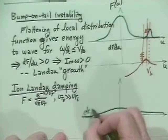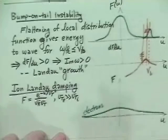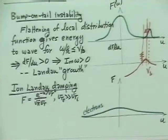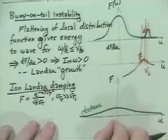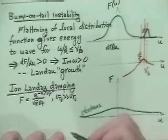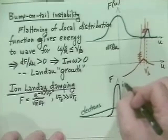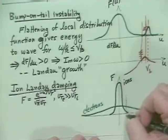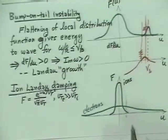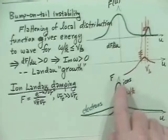The electron thermal velocity distribution looks something like this — broad and low. The ion distribution function on the same scale is about 40 times bigger in amplitude and 40 times narrower. If I came into a region here — imagining a wave with a phase velocity of omega over k right there — then it would interact resonantly and give some significant ion Landau damping.